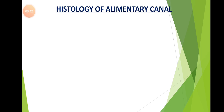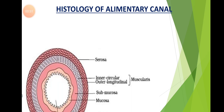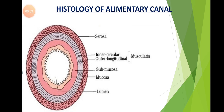The alimentary canal is a long tube measuring about 8 to 10 meters in human beings, which starts with the mouth and ends with the anus. The walls of the alimentary canal from esophagus to rectum possess 4 layers.